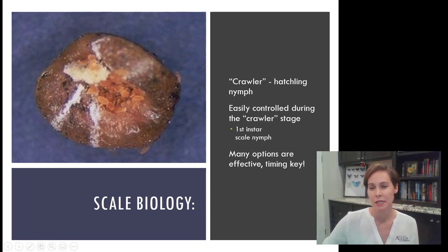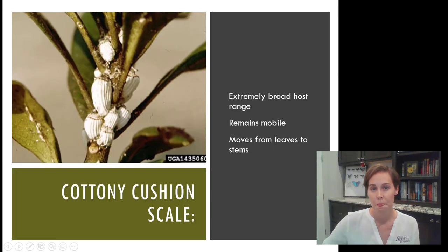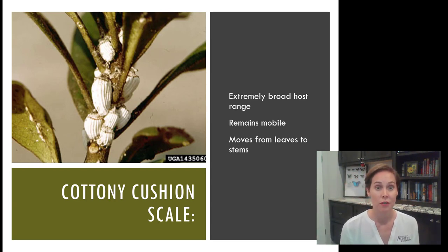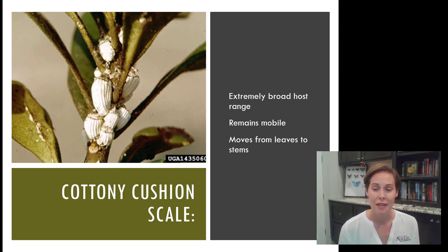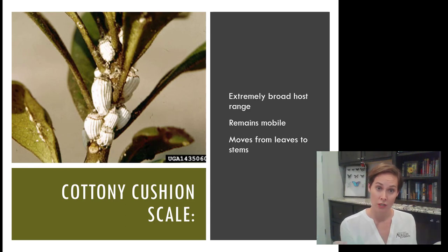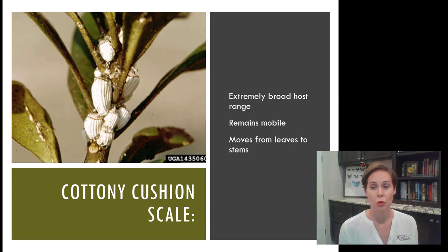Scales are very tedious and labor-intensive insects to try to manage. Cottony cushion scale is one specific type that has a very broad host range — it looks very weird and you may not even recognize it's actually an insect. They can remain mobile their entire life and will move from leaves to stems on the same plant, unlike most scales which stick to either the stem or leaves.